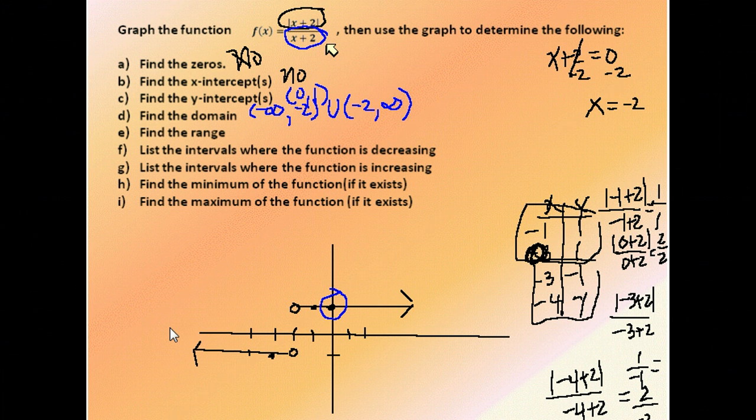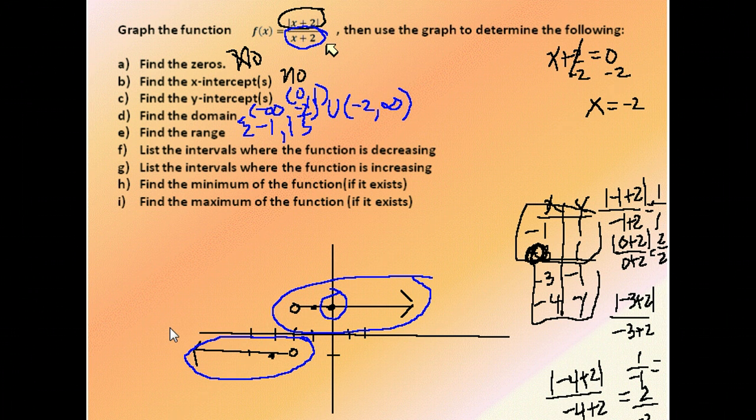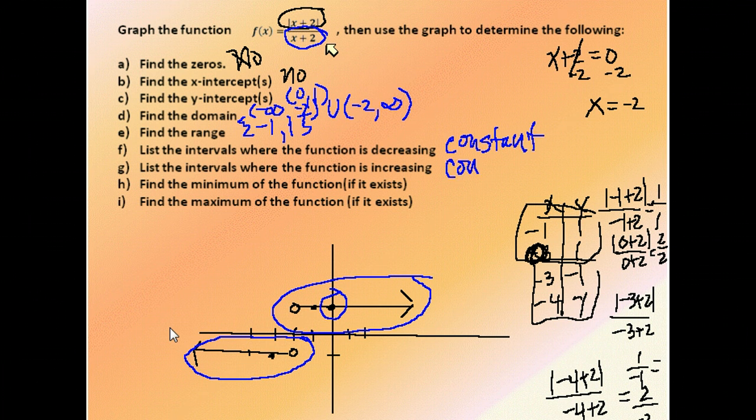Or you can write all real numbers except negative 2. The range is our y-values. Well, what y-values do we have? All of these, the y-value is negative 1, and all of these, the y-value is 1, so our range is just negative 1 and 1. Intervals of increasing and decreasing. Notice neither of these lines are headed upward or downward. They're just constant. So there really are no intervals of increasing or decreasing, only constant.